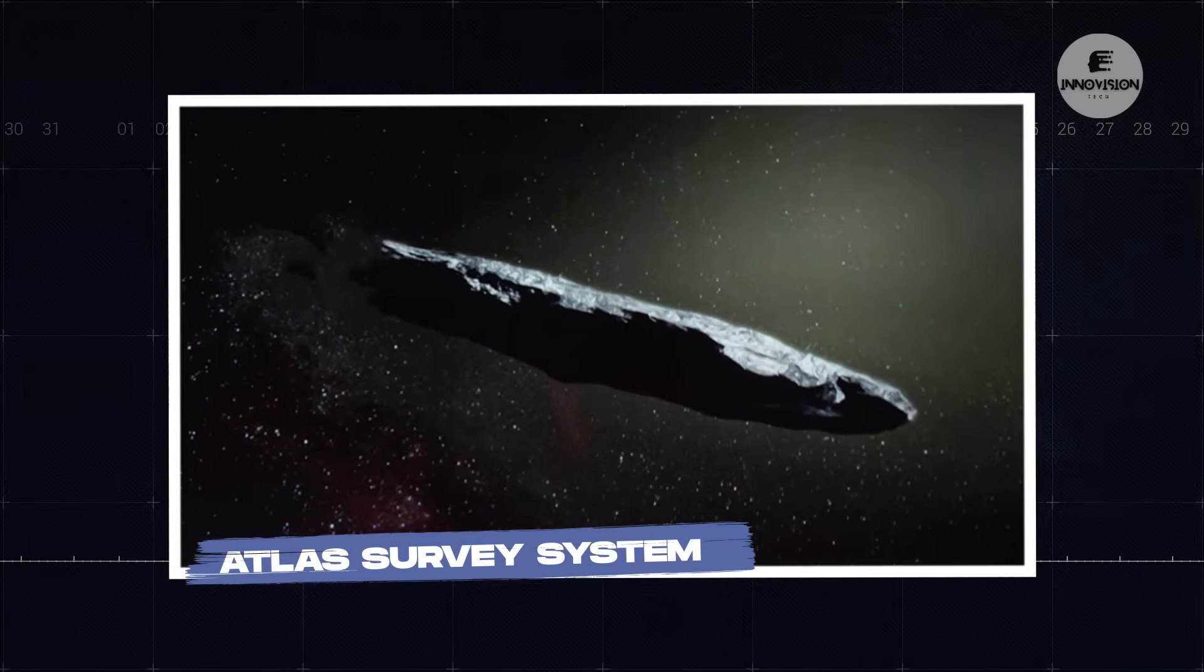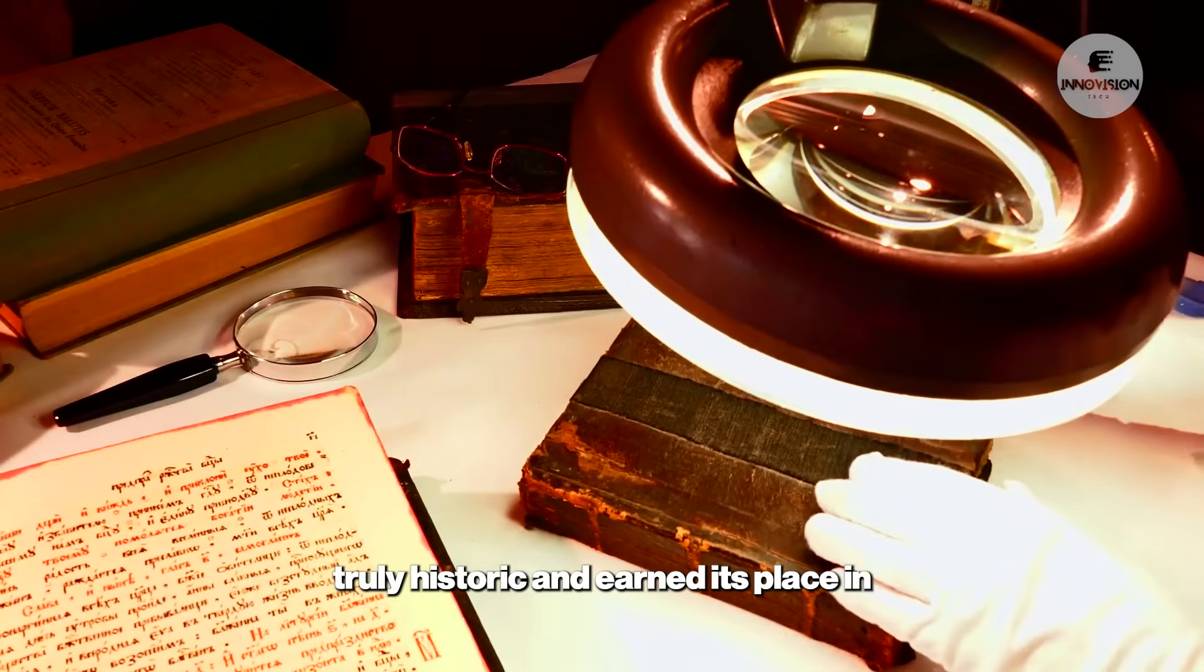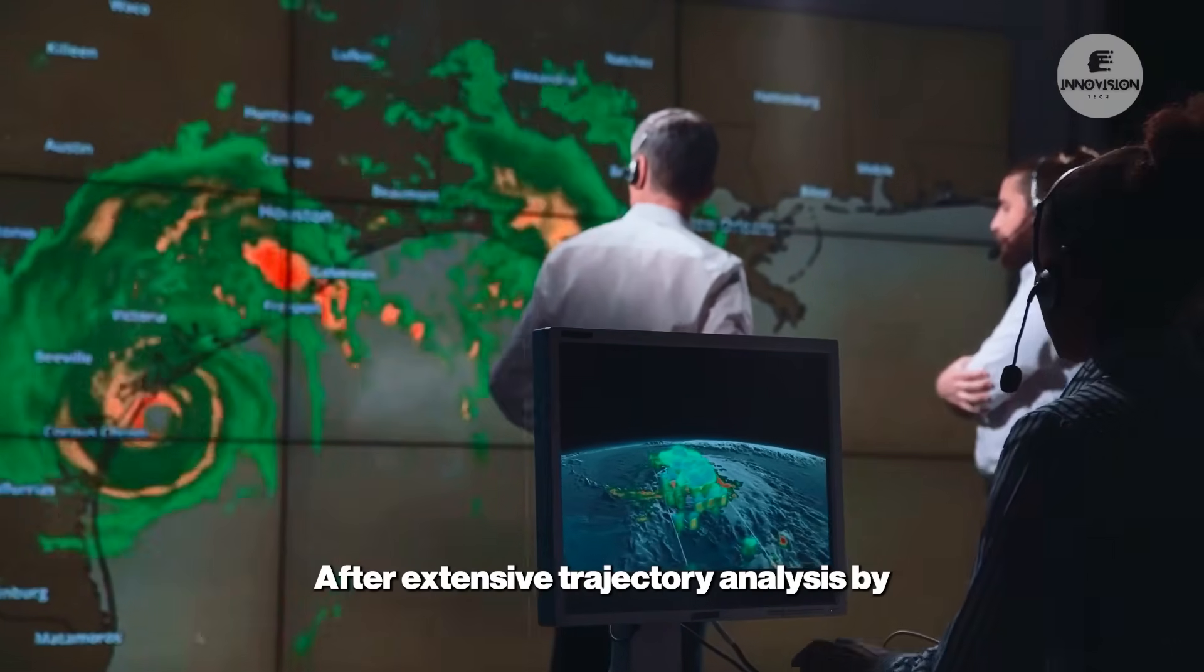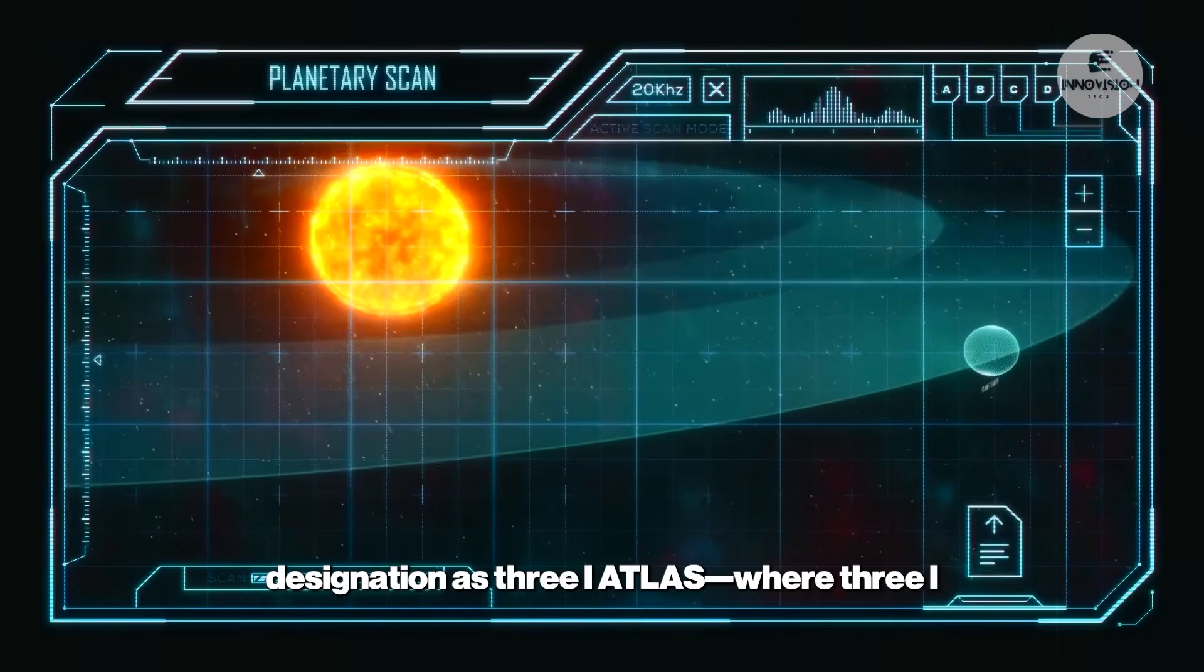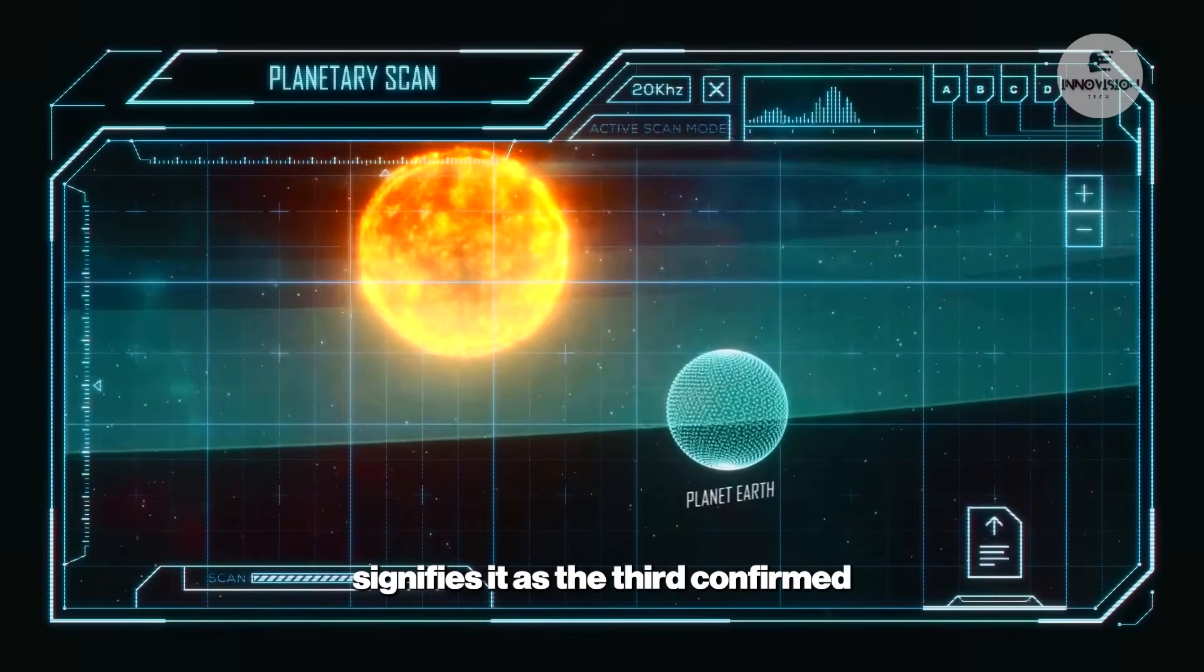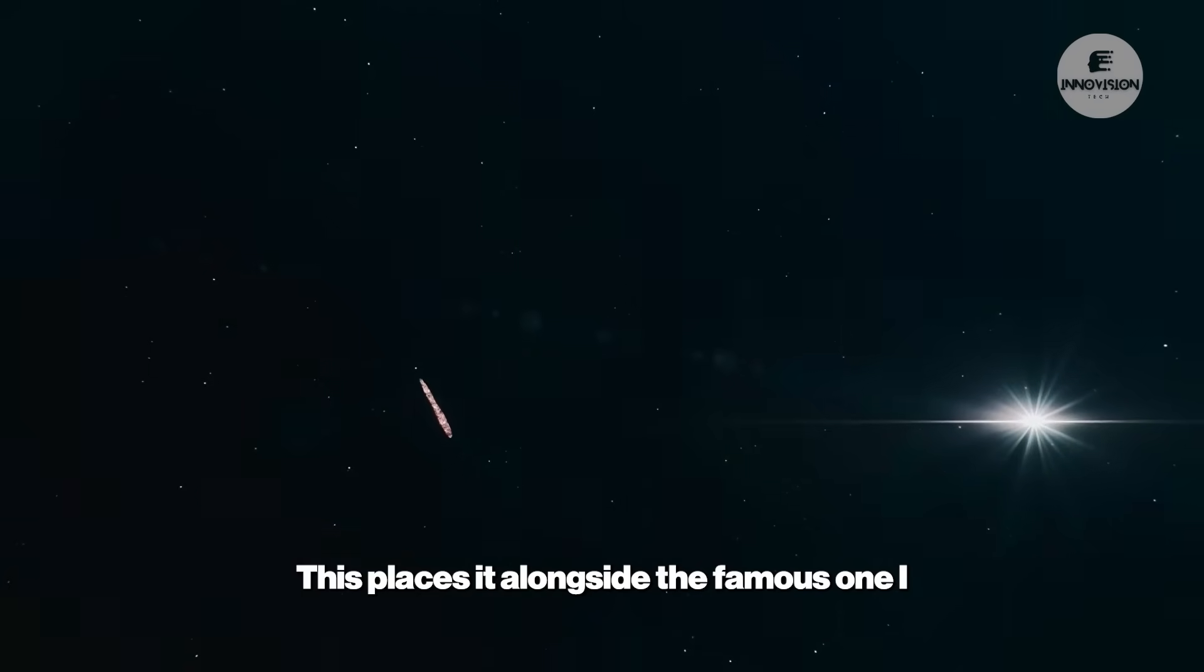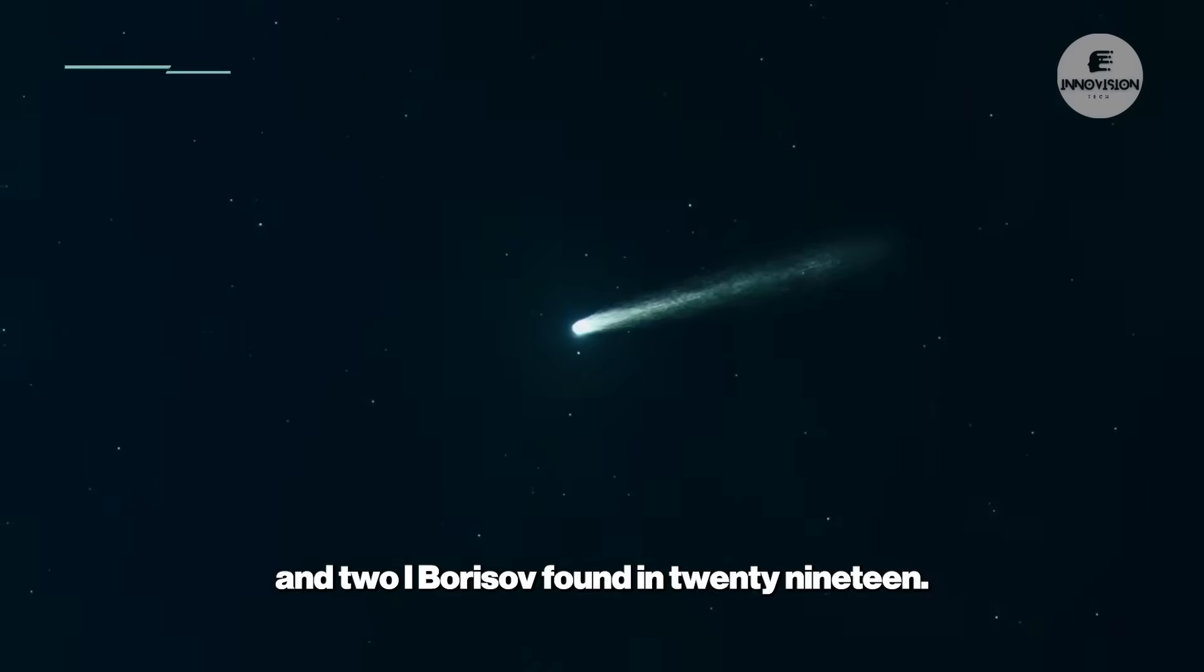Atlas Survey System. But here's where this discovery became truly historic and earned its place in astronomical records. After extensive trajectory analysis by the Minor Planet Center, the object received its official designation as 3I Atlas, where 3I signifies it as the third confirmed interstellar object in human history. This places it alongside the famous 1I Oumuamua discovered in 2017, and 2I Borisov found in 2019.